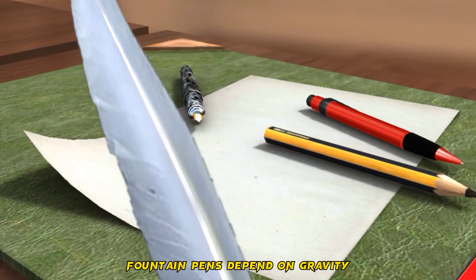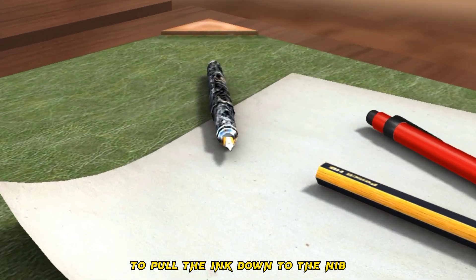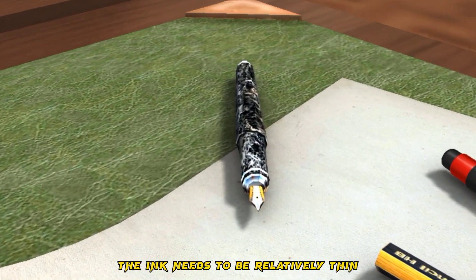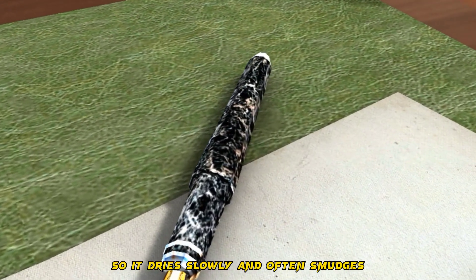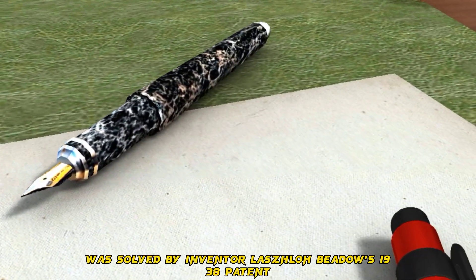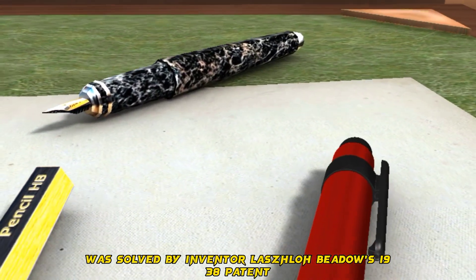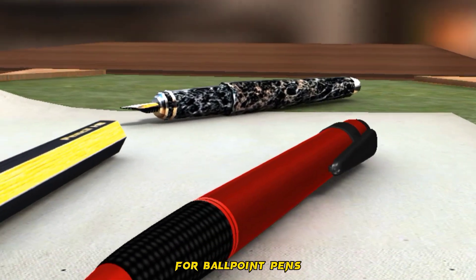Fountain pens depend on gravity to pull the ink down to the nib. The ink needs to be relatively thin, so it dries slowly and often smudges. This problem was solved by inventor Laszlo Biro's 1938 patent for ballpoint pens.